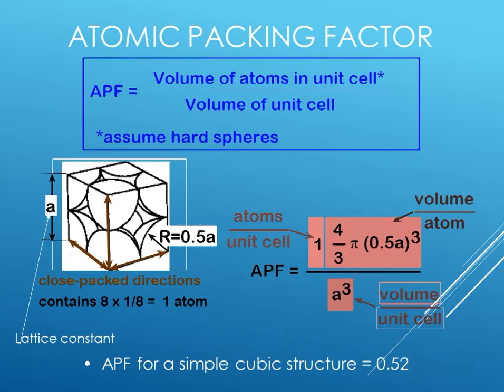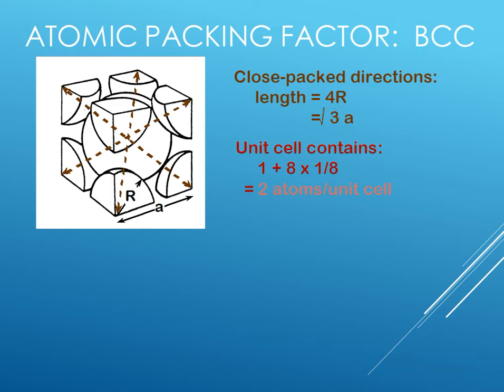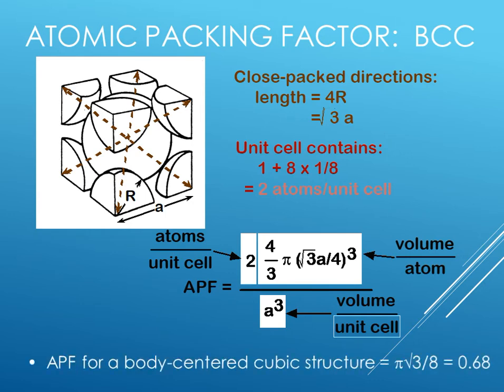Let us use now similar logic for body-centered cubic where we had derived earlier that length is root 3 into a or unit cell now contains two atoms per unit cell. So the APF formula becomes 2 into 4 upon 3 pi r cube where the r value is root 3 a upon 4 volume is a cube. Calculating this we get an answer 0.68 or packing efficiency becomes 68 percent. The void space remaining is 32 percent.